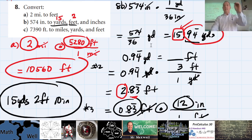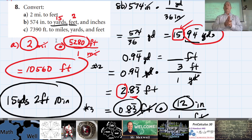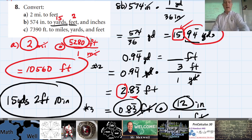Let's do 8c — why don't you guys try c on your own? I'll give you a minute, then come back and show my work. The problem is 7,390 feet to miles, yards, and feet. Go ahead.